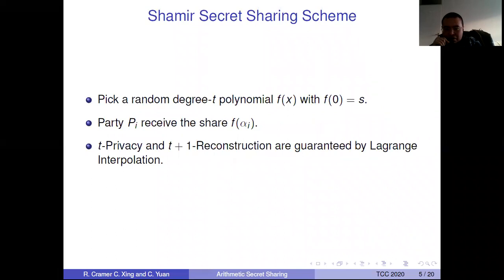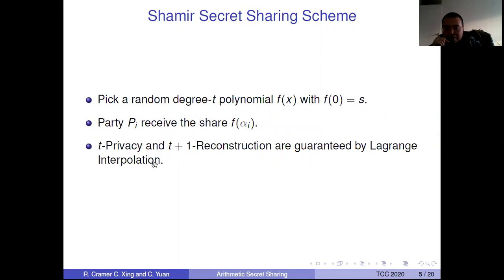There is a very famous Shamir secret sharing scheme which can realize the secret sharing scheme mentioned in the previous slide. What is the Shamir secret sharing scheme? Assume we have a secret S; we pick a random degree-T polynomial F(x) with F(0) equals S. Each party P_i receives a share F(alpha_i), where alpha_1 to alpha_n are n distinct non-zero elements. We can show this scheme has T-privacy and T+1 reconstruction due to Lagrange interpolation.